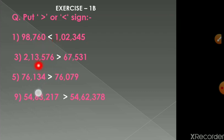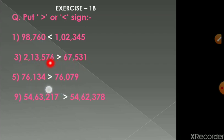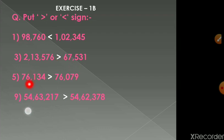Question number 3: 2 lakh 13 thousand 576 versus 67 thousand 531. The first is a six-digit number and the second is a five-digit number, so 2 lakh 13 thousand 576 is clearly greater than the second number.